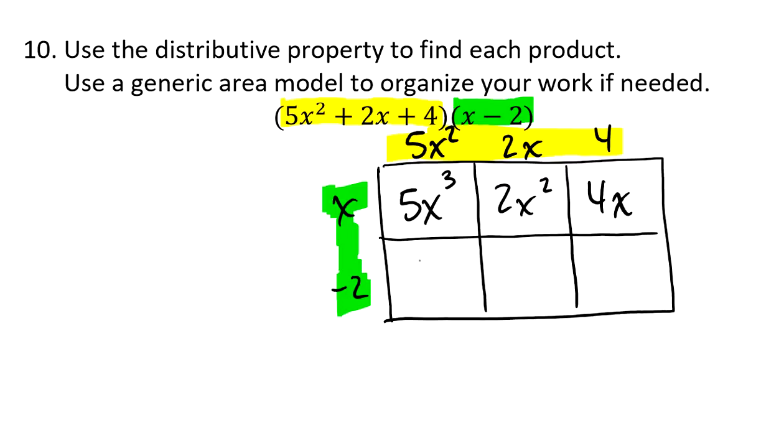Down below, all the way over on the left, I've got a negative 2 times 5x², which is negative 10x². And then I've got a negative 2 times a 2x, which is negative 4x. And then finally, I've got a negative 2 times a 4, which is a negative 8.